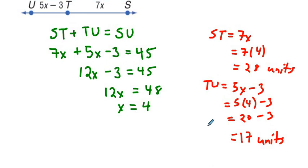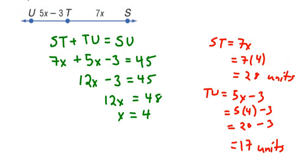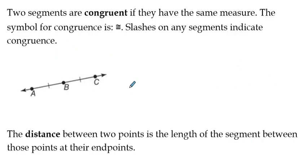So that's our exploration of the segment addition postulate. Let's talk a little bit more about distances on a number line and on a coordinate plane. Before we talk about distance, we need to talk a little bit about congruency. Two segments are congruent if they have the same measure. The symbol for congruence is an equality symbol with a little curved line up top.